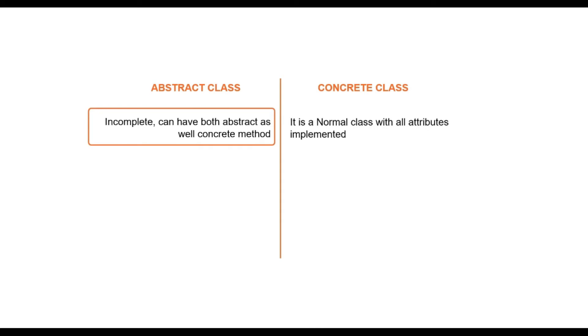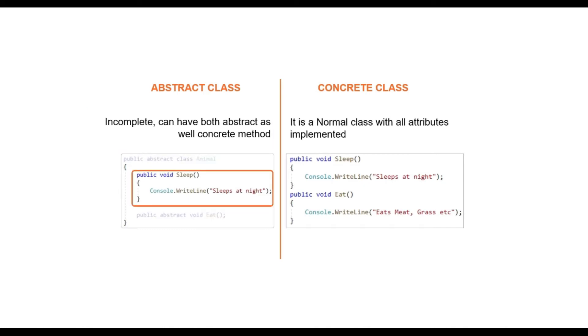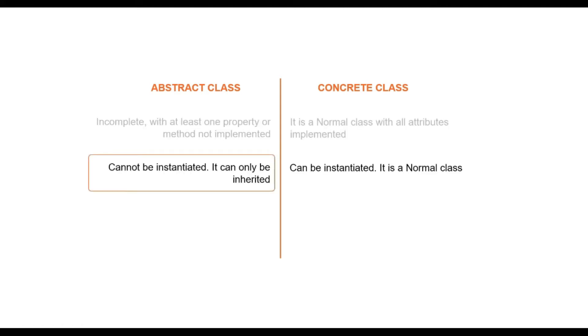Abstract class can have both implemented as well as not implemented methods. As you can see here, sleep is an implemented method which we can also call it as a concrete method, whereas eat is not implemented method, it's an abstract method. Hence, we can call abstract class as an incomplete class, whereas concrete class is a normal class with all attributes implemented. Abstract class is a special type of class in C sharp where it cannot be instantiated. As mentioned earlier, it is an incomplete class, hence logically it does not make sense to instantiate. Now, if you try to instantiate it, you will get a compile time error, stating, cannot create an instance of an abstract class.